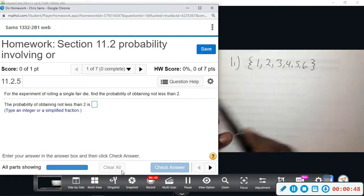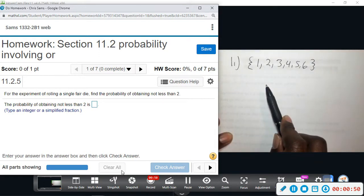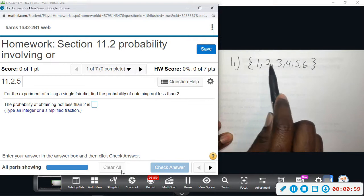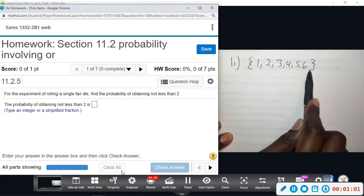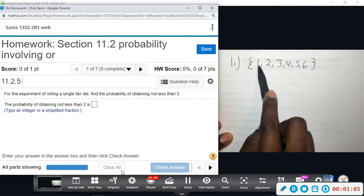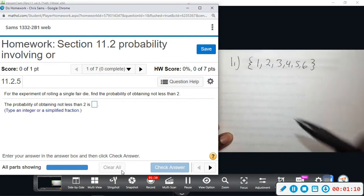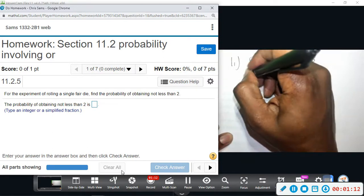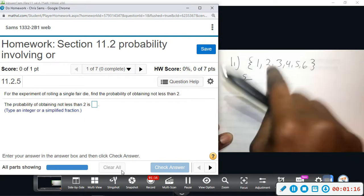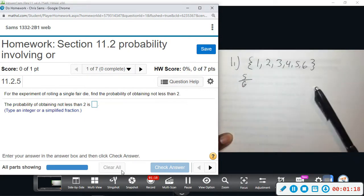Out of these six numbers, we want not less than 2. That means greater than or equal to 2. The only thing less than 2 would be 1, so not less than 2 would be 2 and above. That gives us 5 out of 6 for this one: 2, 3, 4, 5, 6 are the numbers not less than 2.